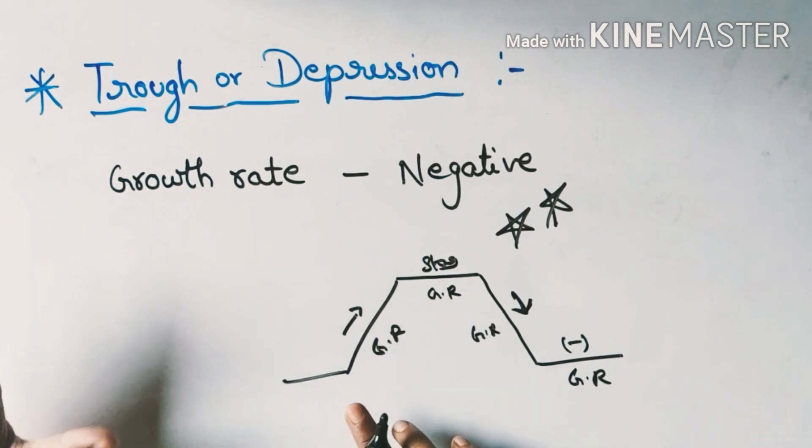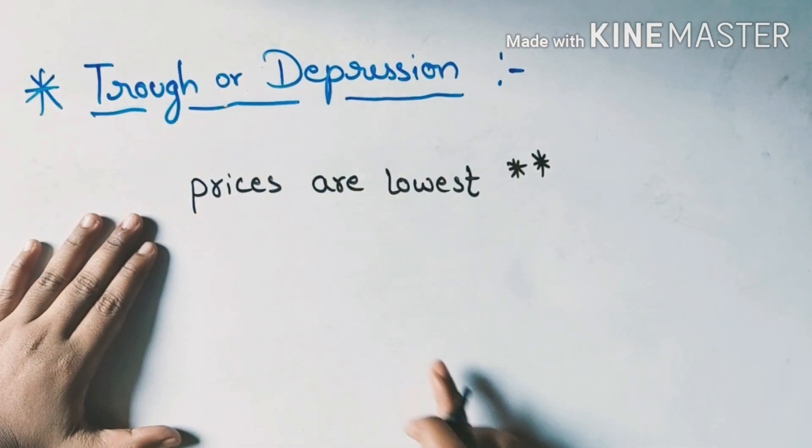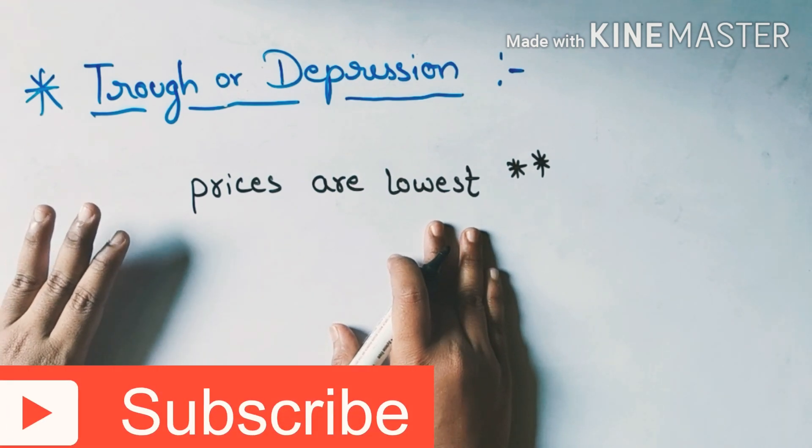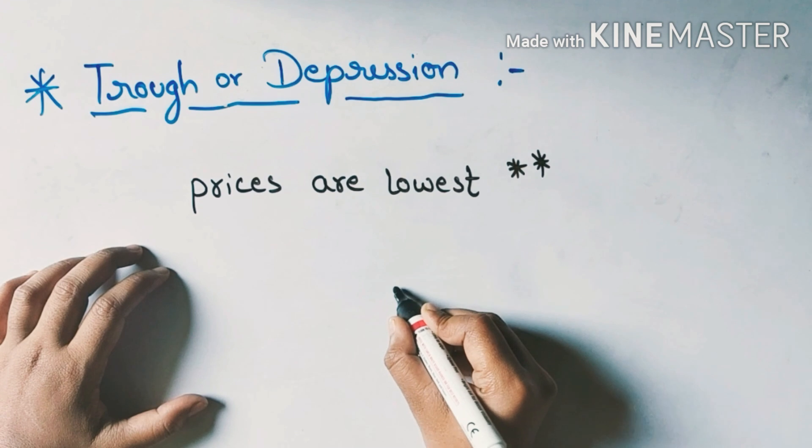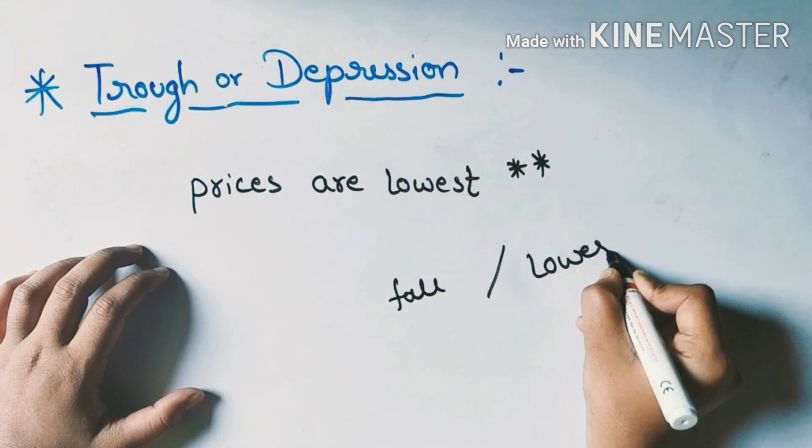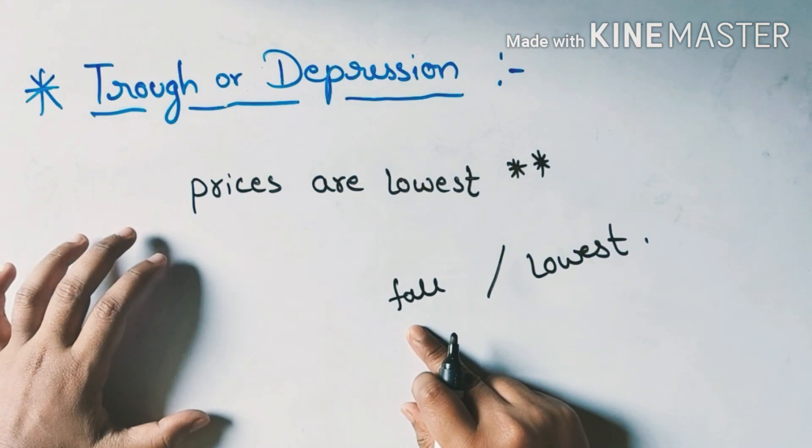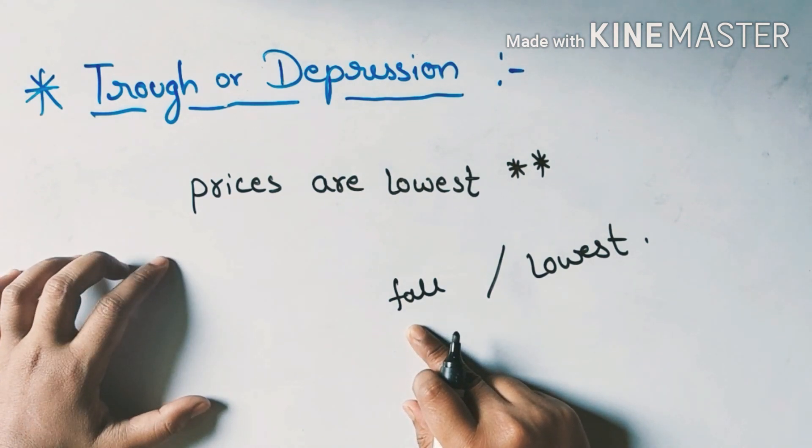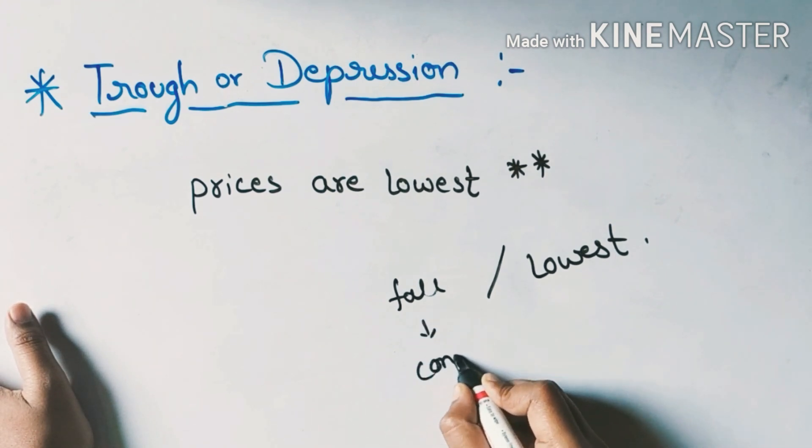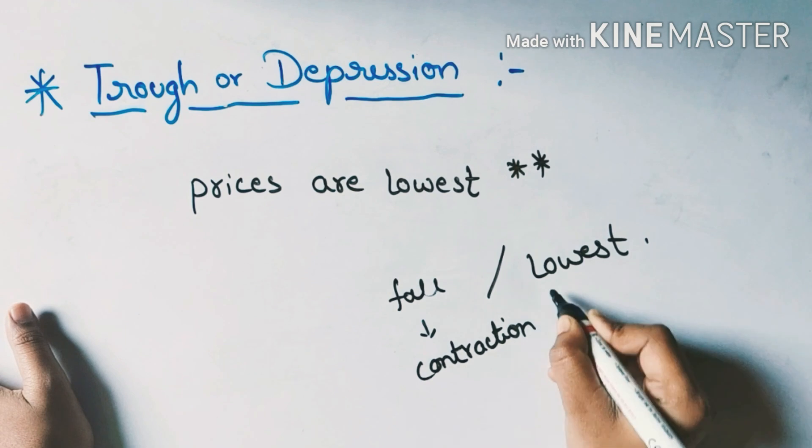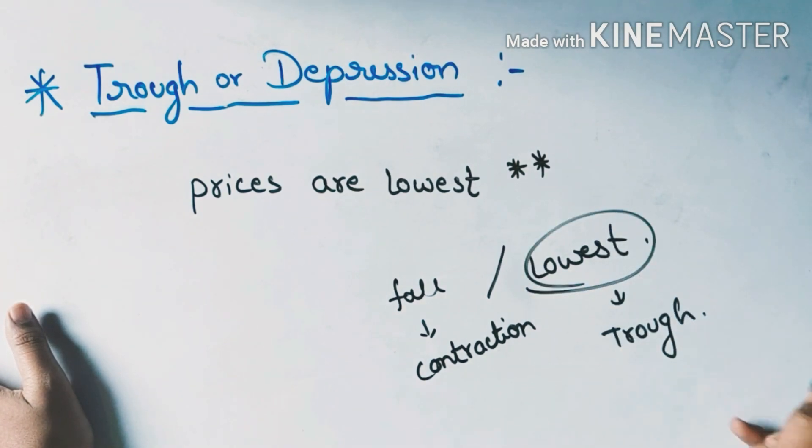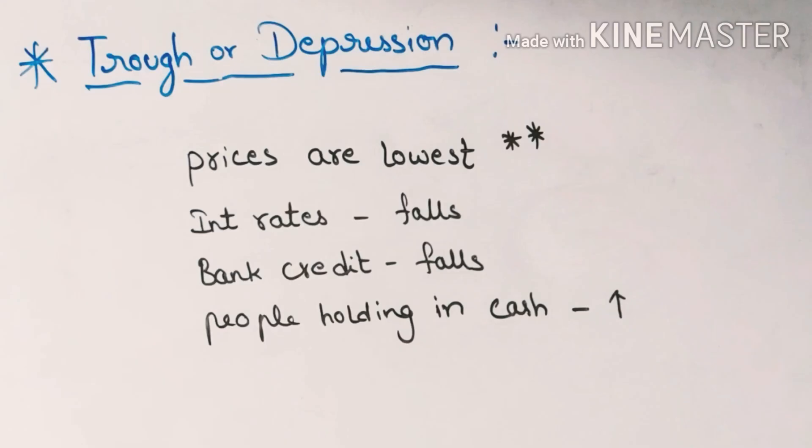You have to remember this: profit rates are negative. Prices fall. Prices are lowest in the trough phase.